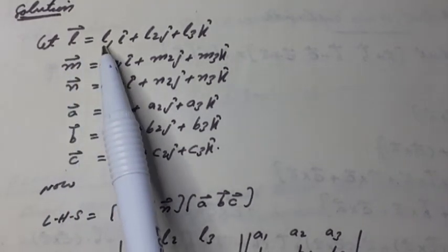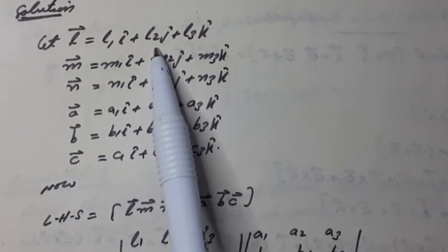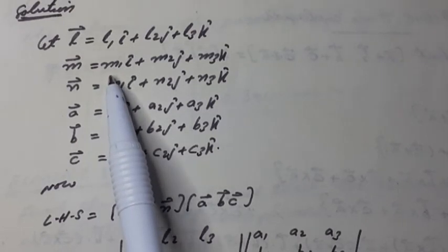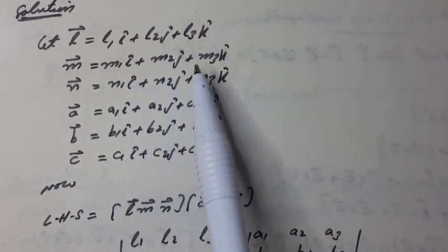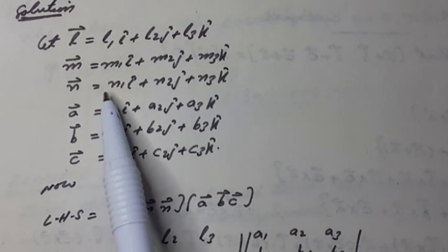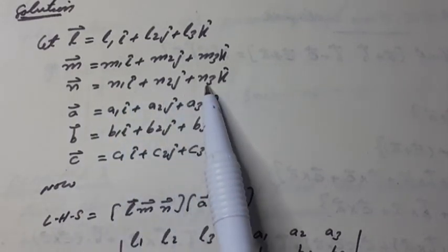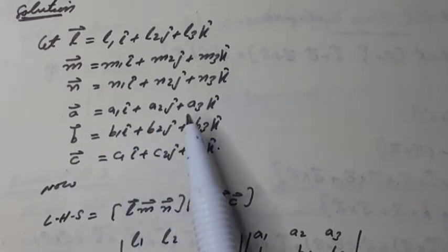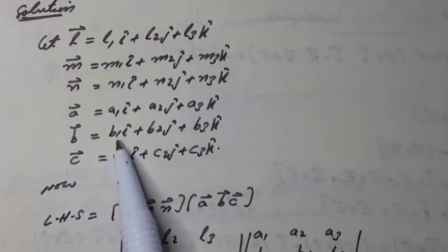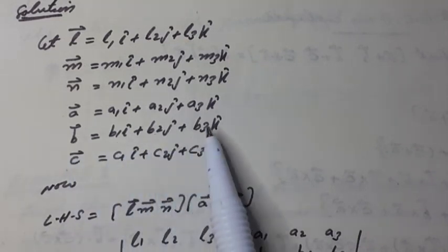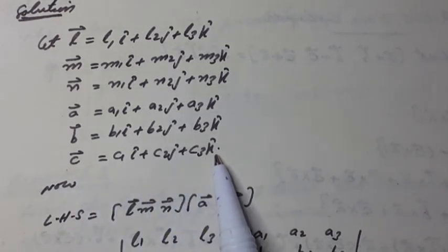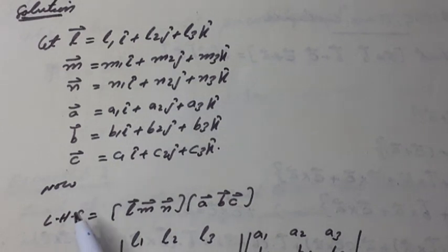Solution: Let L vector = l1·i + l2·j + l3·k. Similarly, M vector = m1·i + m2·j + m3·k. N vector = n1·i + n2·j + n3·k. A vector = a1·i + a2·j + a3·k. B vector = b1·i + b2·j + b3·k. C vector = c1·i + c2·j + c3·k.